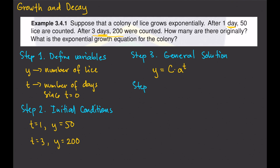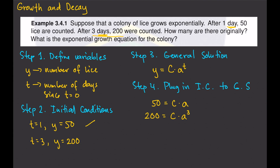Step 4: plug in our initial conditions to our general solution. For the first initial condition, when t is 1, y is 50, so 50 equals c times a to the power of 1, which is just c times a. The second initial condition is t equals 3, y equals 200, so 200 equals c times a to the power of 3.